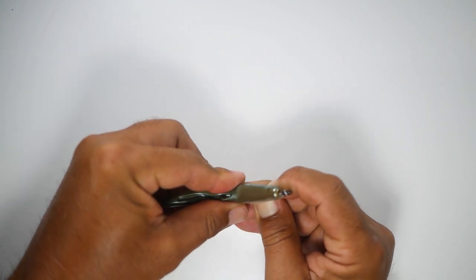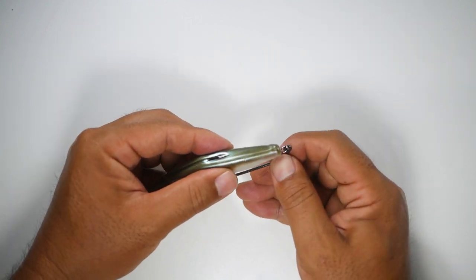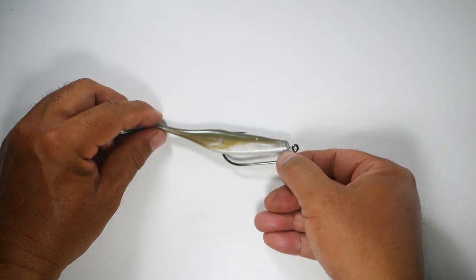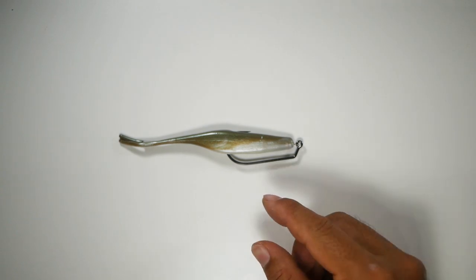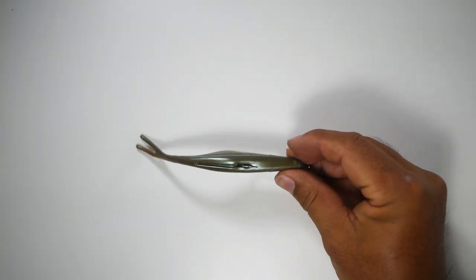Once we do that, we'll bring the hook out. And there we go. Nice and centered. And this is not going to spin and it will fall easily.